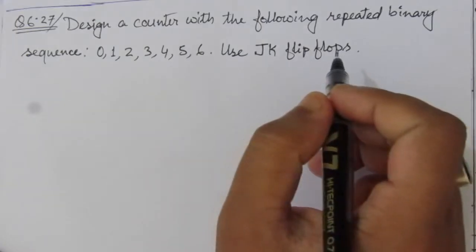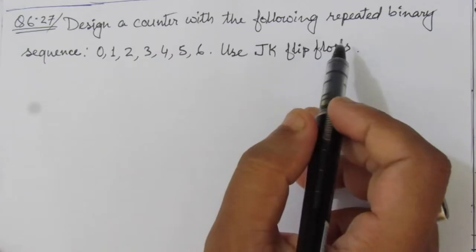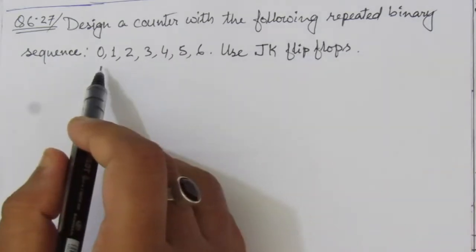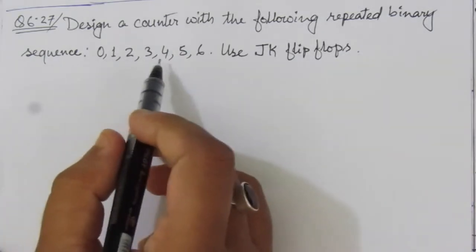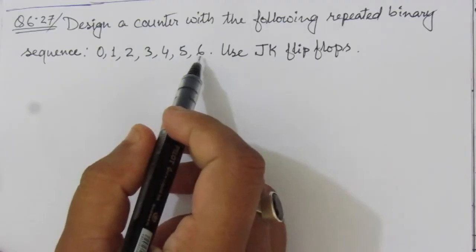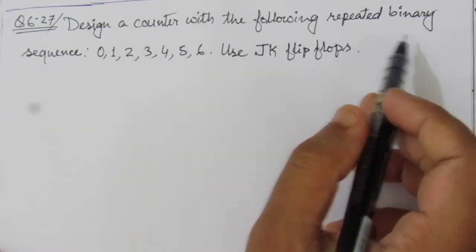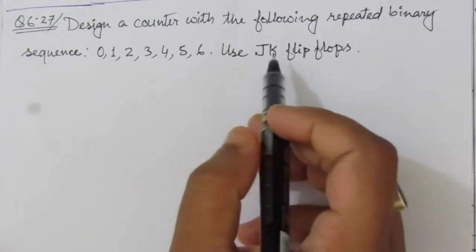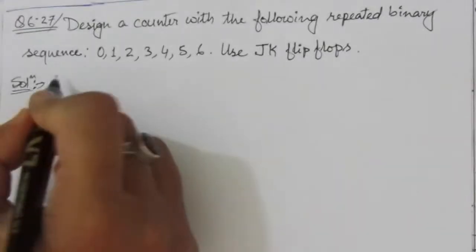The problem is: design a counter with the following repeated binary sequence. The sequence given is 0, 1, 2, 3, 4, 5, 6, and after 6 it will go back to 0 because it is a repeated binary sequence. We have to use JK flip-flops.